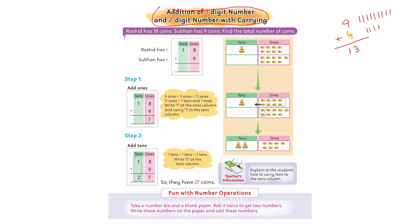13 میں سے یہ 3 نیچے لکھ لیتے تھے اور 1 آگے tens column میں carry کر لیتے تھے۔ وہ ones اسی طریقے سے نیچے آ جاتا تھا کیونکہ نیچے کوئی number نہیں ہوتا تھا، zero ہوتا تھا۔ لہٰذا وہ as it is آ جاتا تھا۔ یہ تھا one digit کے ساتھ one digit کو add کرنا۔